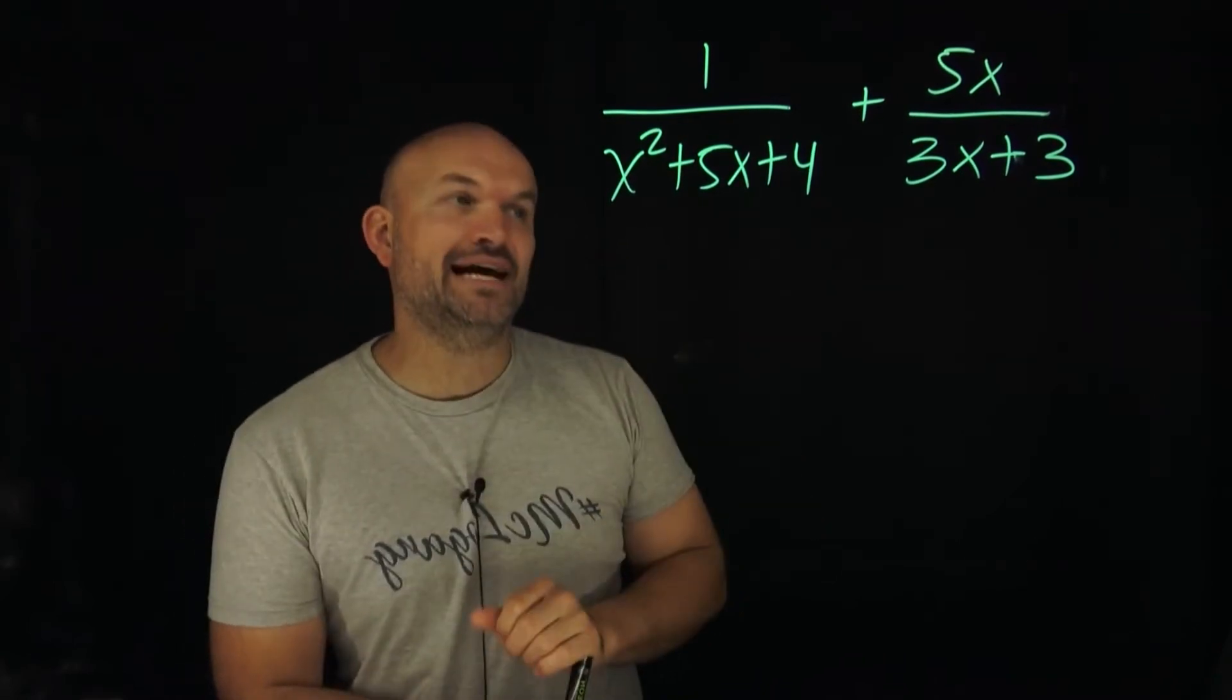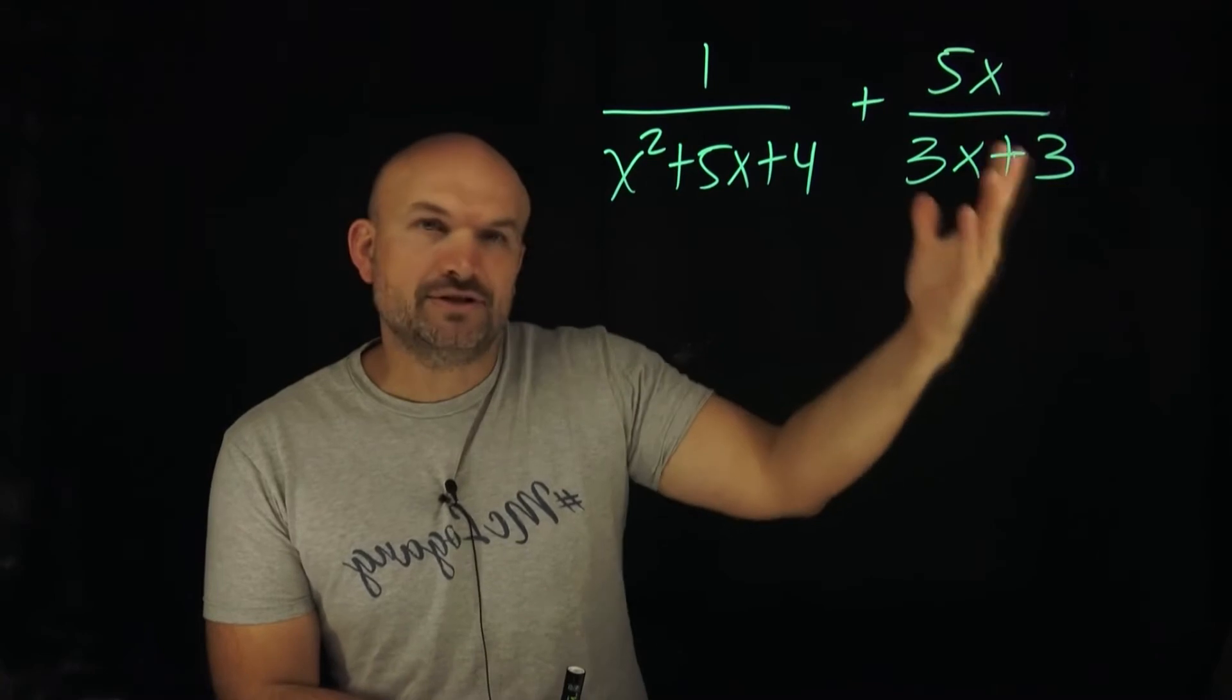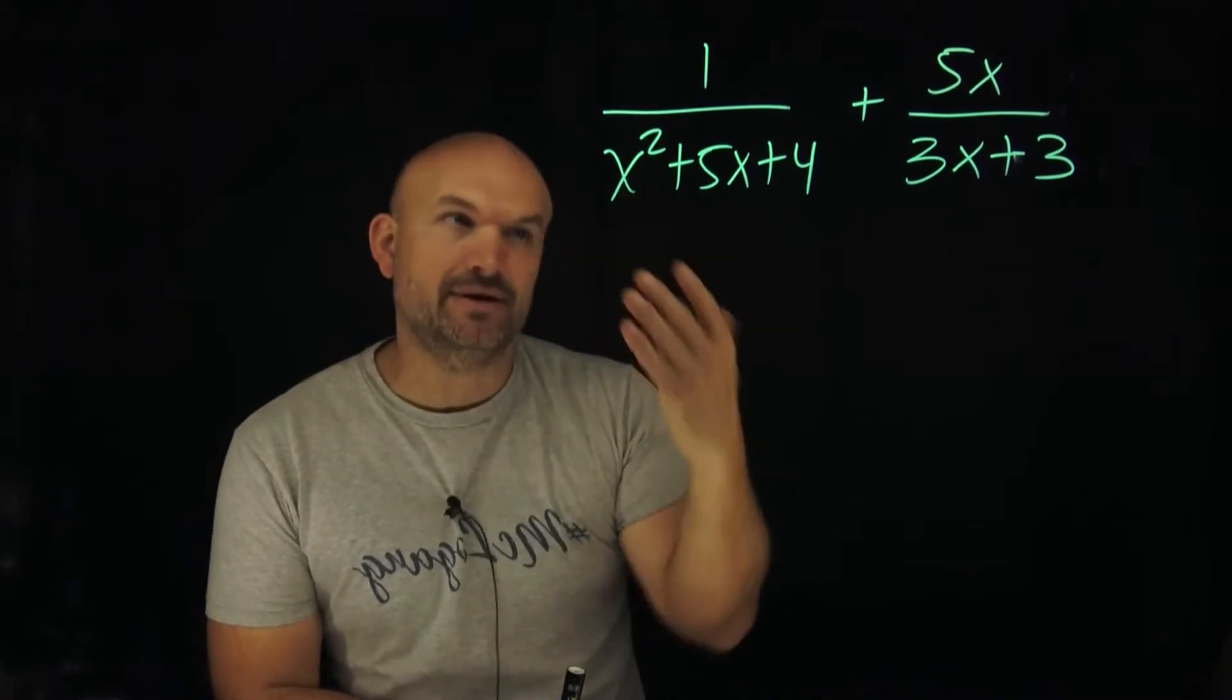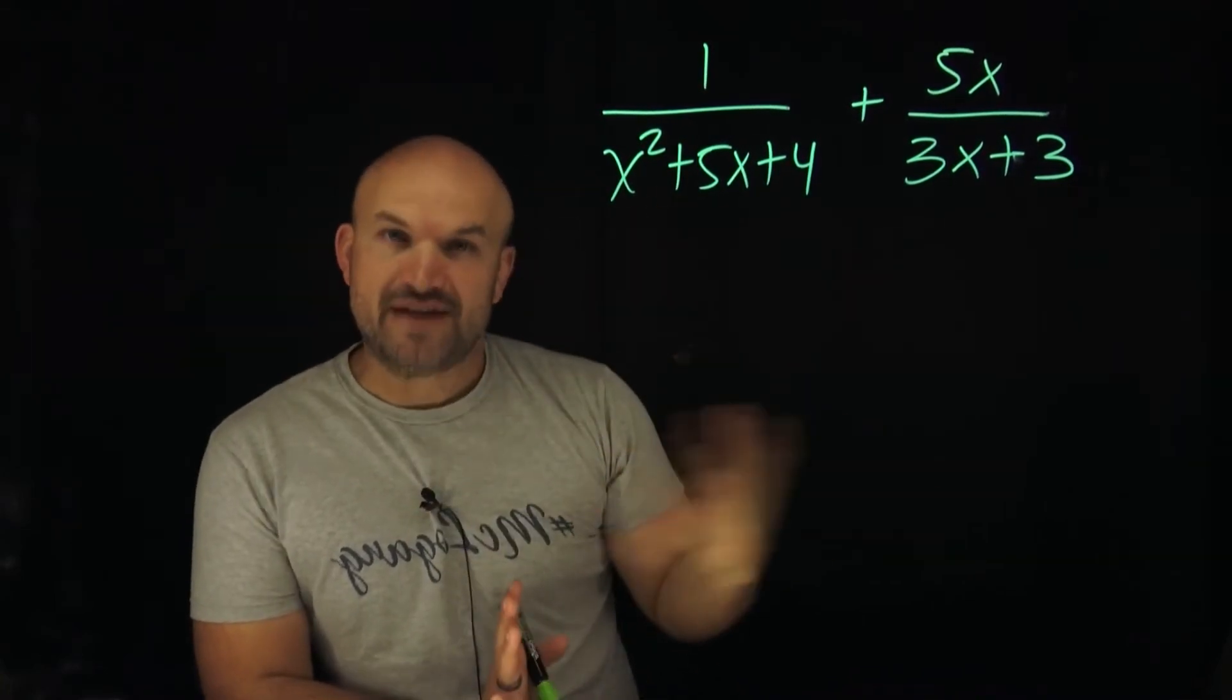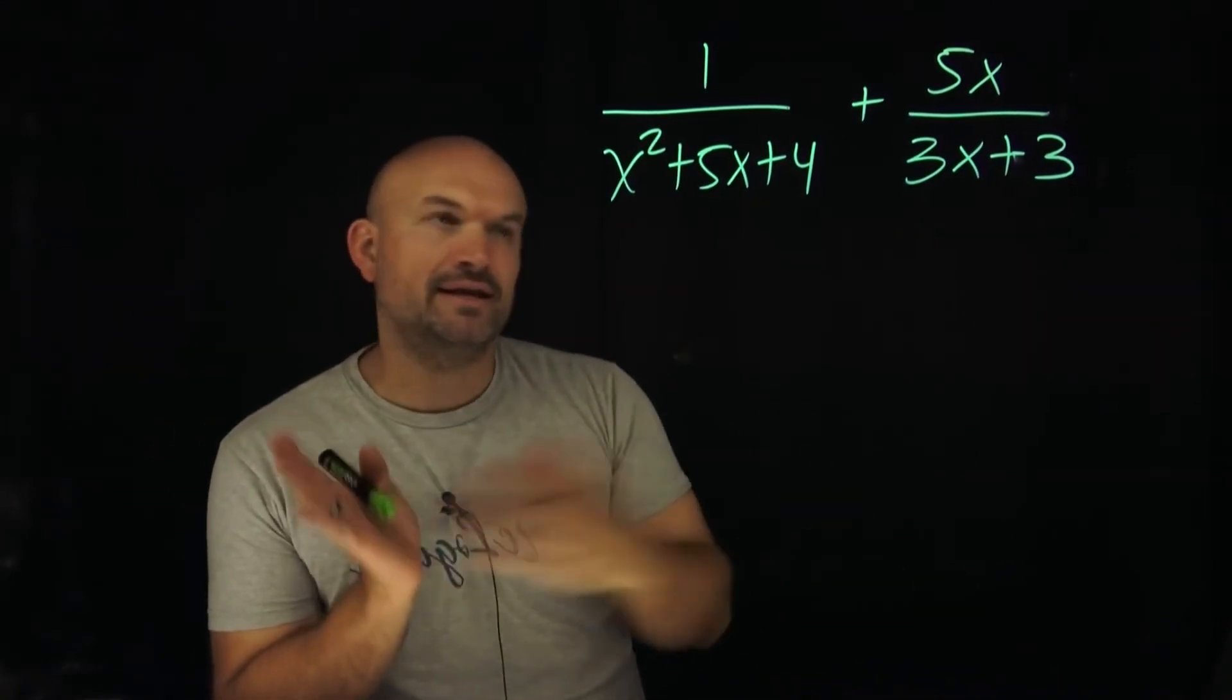And that all comes into identifying the LCD. I think a lot of students hate adding fractions or rational expressions because we got to get the common denominator. One of the easiest, fastest ways to find the common denominator is just to multiply your denominators. And that's one thing I talk about in previous videos.